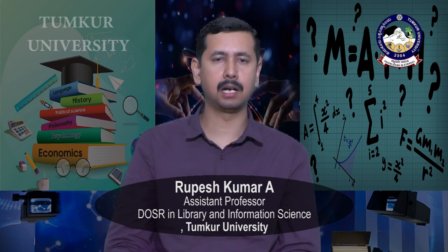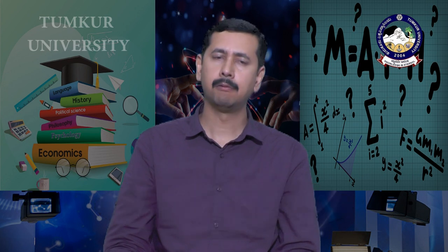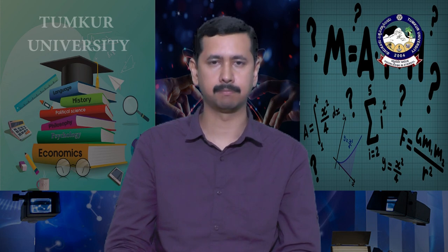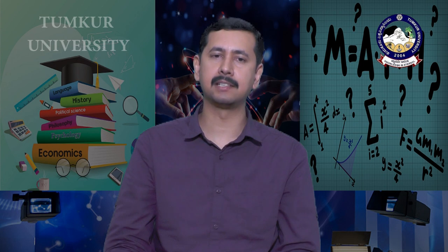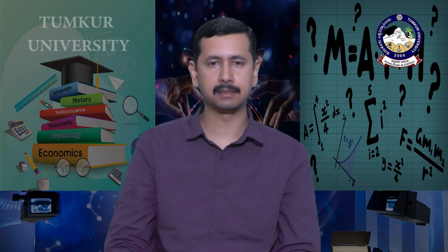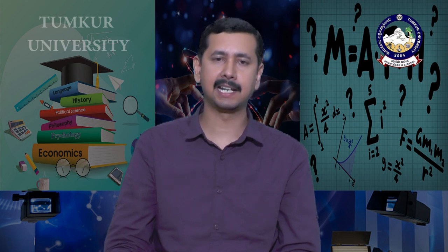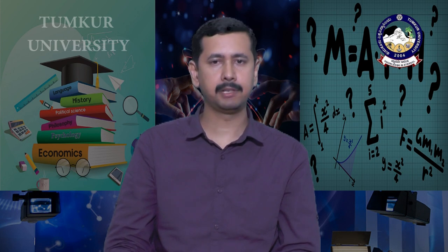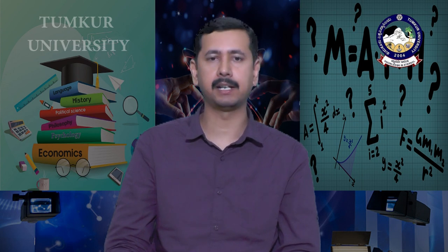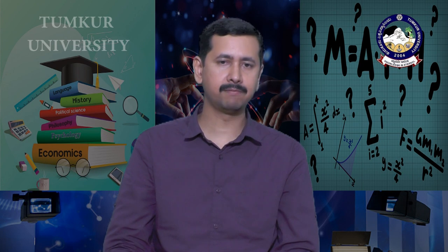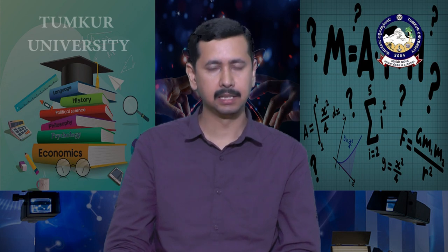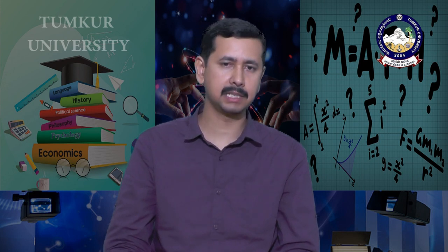The third characteristic is that digital libraries are different from websites. Websites may or may not have methods for search and retrieval of information. But search and retrieval mechanisms form the core of digital libraries. Every file on a website may not have metadata and an identifier. On the other hand, every file in a digital library will have associated metadata and a unique identifier. In a website, more emphasis is on the presentation of content, whereas in a digital library, more emphasis is on the organization of content and its retrieval.